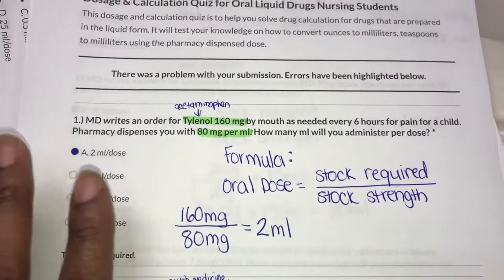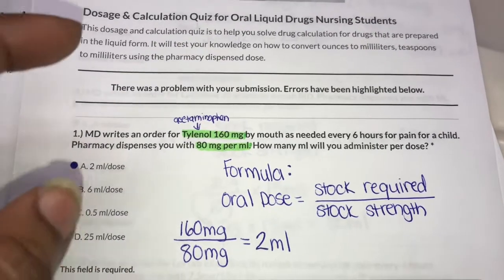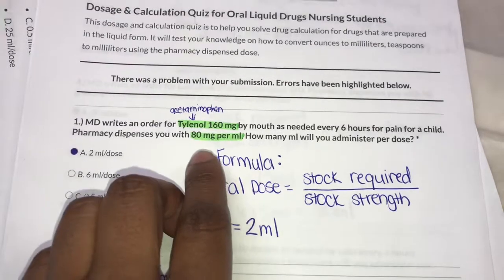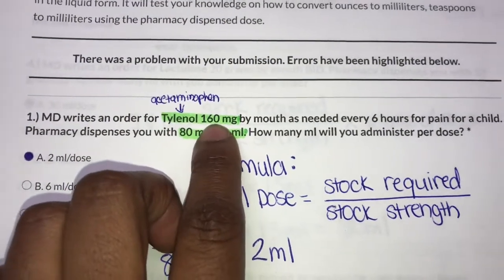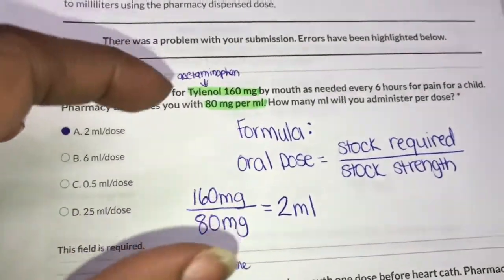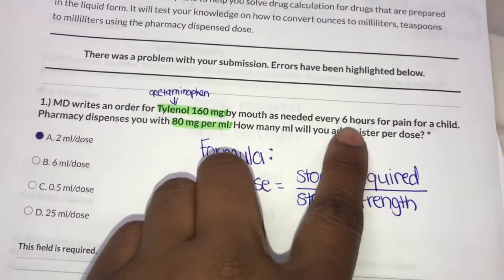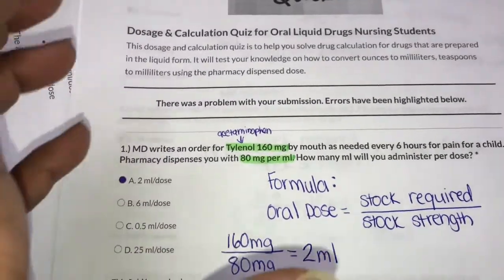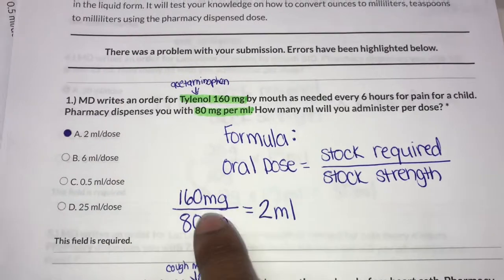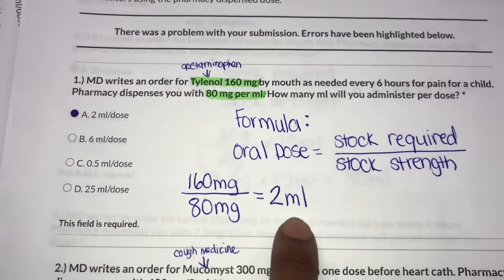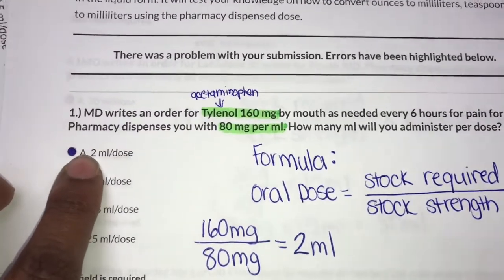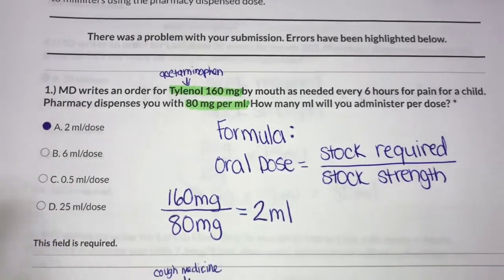You can already see the answer, but I'd like for you to try to work with me on this one. The formula for the oral dose is: stock required divided by stock strength. I highlighted the required amount which is 160 mg and the strength on hand which is 80. You want to make sure you can identify which numbers are the main part because they throw extra numbers in to try to throw you off. So you put 160 on top, 80 on the bottom, divide, and you get 2 ml. That's question one — the answer is 2 mls.